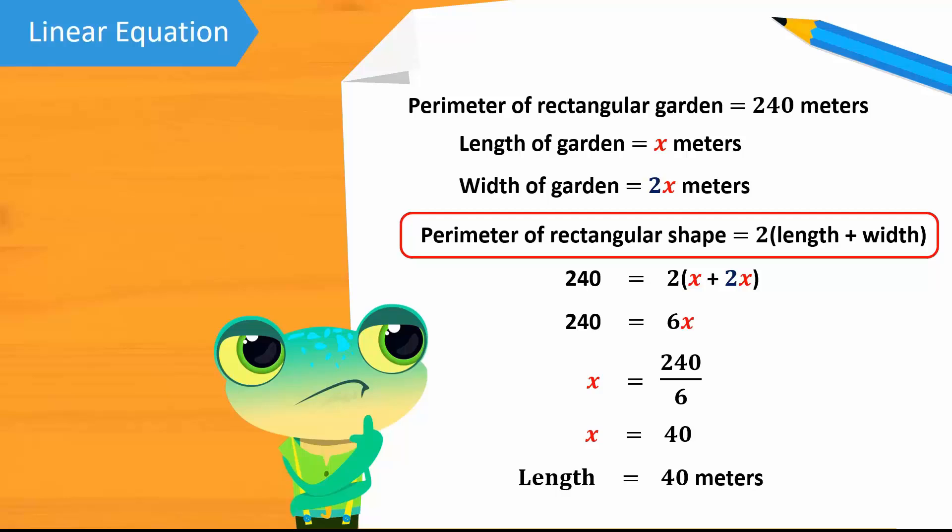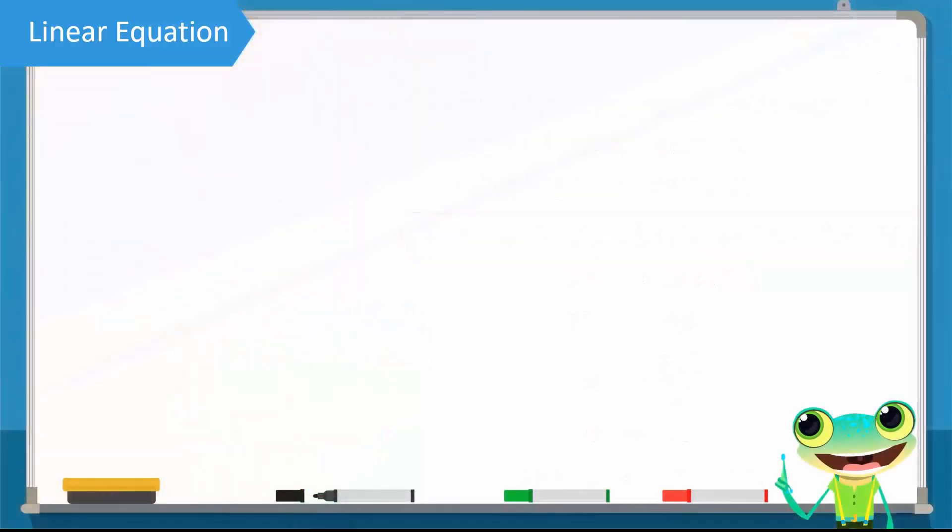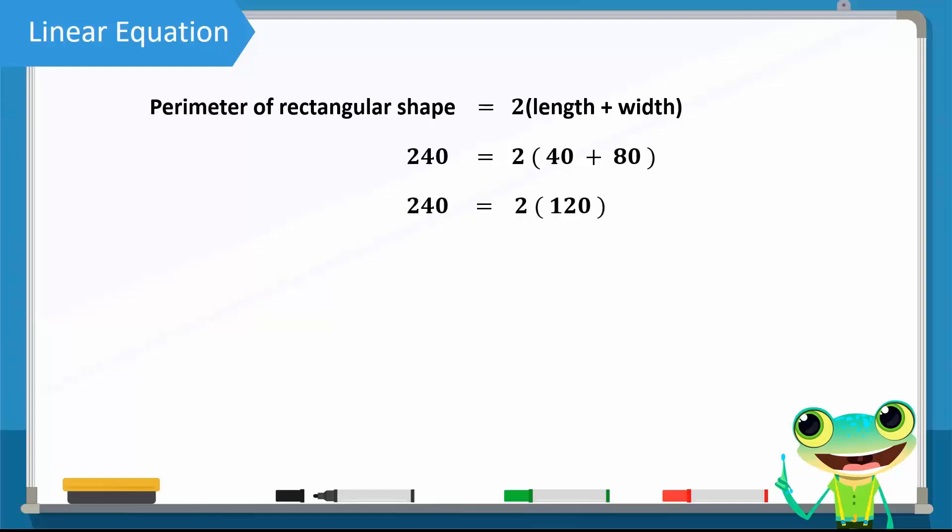Since the width is double the length, the width is equal to 2 multiplied by 40 which is equal to 80 meters. We can also verify the values by substituting the calculated values in the formula for the perimeter. We know that the perimeter is equal to 2 multiplied by the sum of the length and width. 240 is equal to 2 times 40 plus 80. Solving it further gives 240 equal to 2 times 120. Finally, we get 240 equals to 240. Since the left hand side is equal to the right hand side, therefore the calculated values are correct.